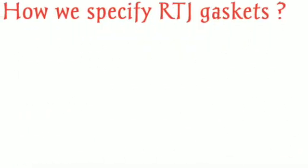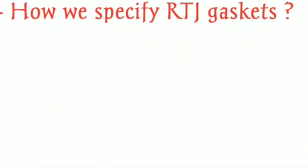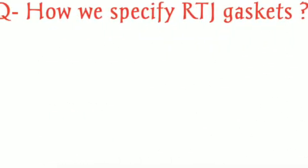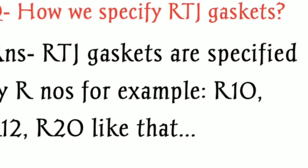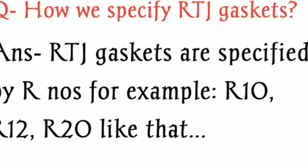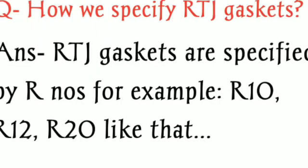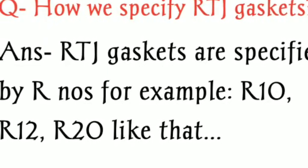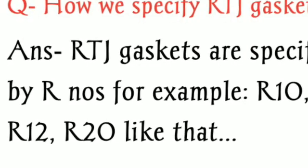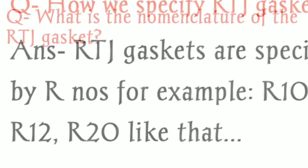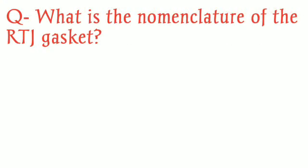The next question is: how do we specify an RTJ gasket? RTJ gaskets are specified by R numbers, for example R10, R12, R20. The next question is: what is the nomenclature of an RTJ gasket? The basic nomenclature of RTJ gaskets is oval shape and octagonal shape.